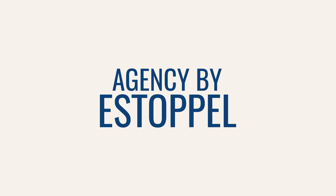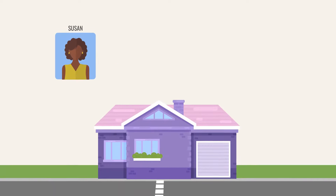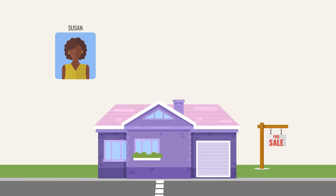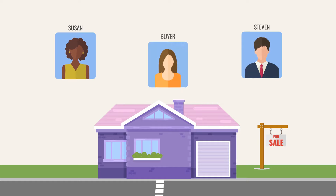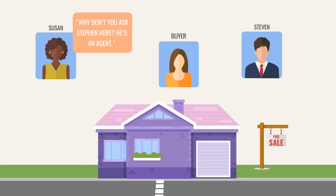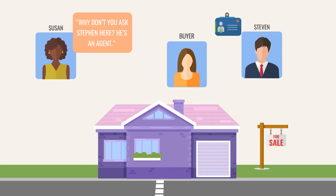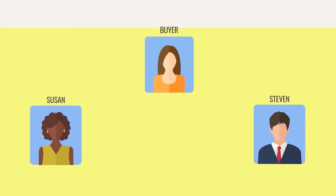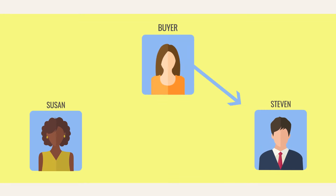Agency by Estoppel. Estoppel is a tricky one. Let's use Steven and Susan again to help explain it. Susan is standing in front of her house putting up her for sale sign when Steven stops to talk to her about the house. A potential buyer walks past and asks about the house too. Susan, who thinks she's funny, says, 'Why don't you ask Steven here? He's an agent.' The potential buyer gets Steven's business card and calls him later about Susan's property. Even though there is no formal agreement, if Susan allows the potential buyer to continue believing that Steven is her agent, there could be an agency by Estoppel.